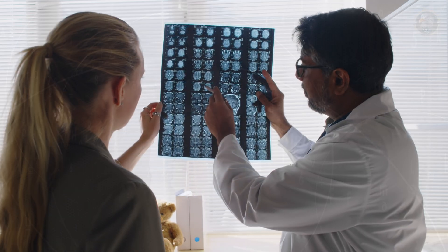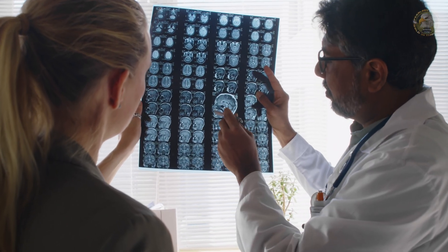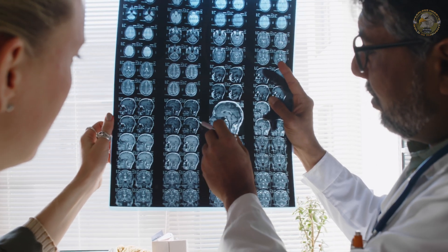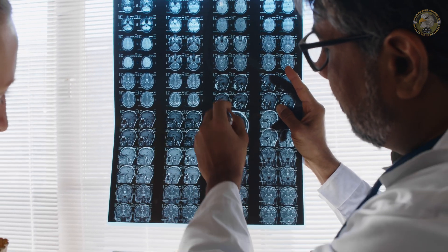This challenge is called the credit assignment problem. How do individual synapses know they're contributing to a bigger behavior? Well, UCSD scientists just cracked a huge piece of that puzzle using high-powered imaging in real time, watching mice learn as their neurons lit up in different ways, in different places, simultaneously.